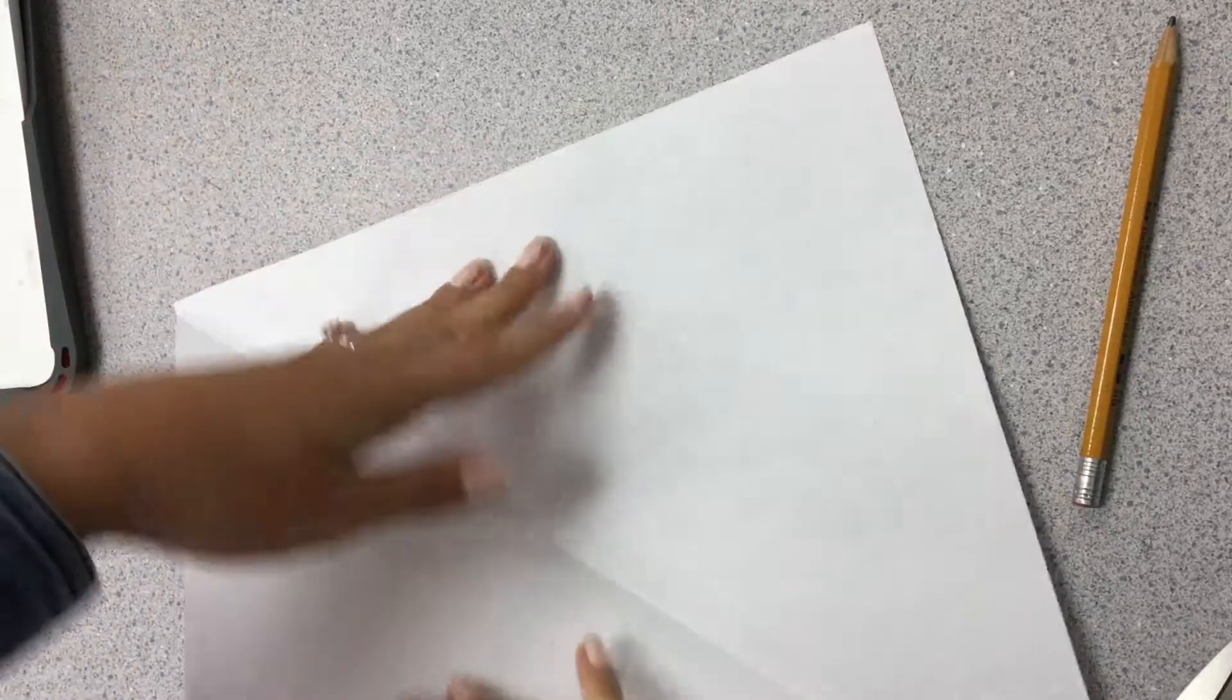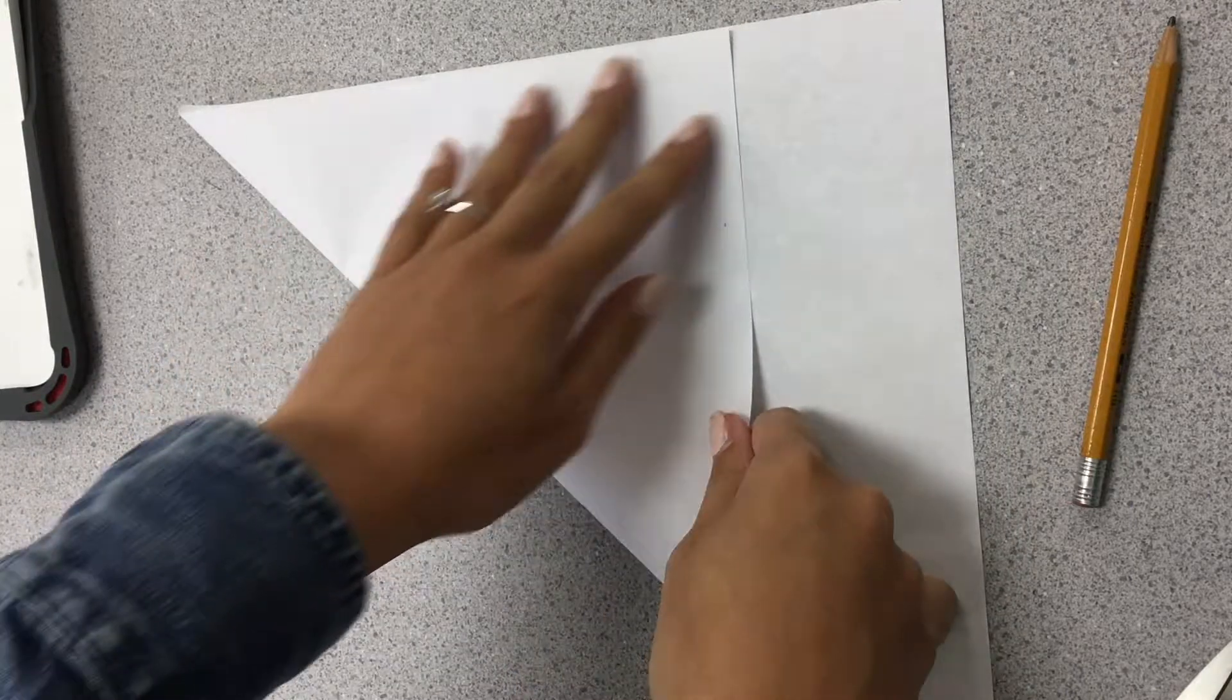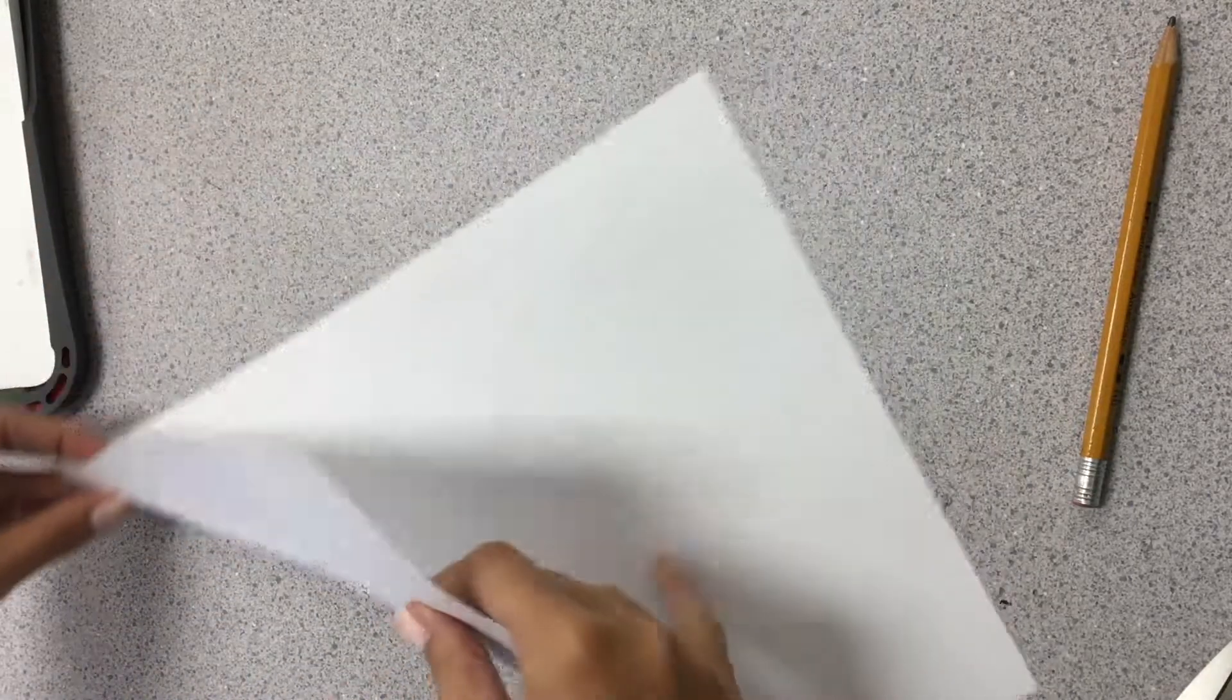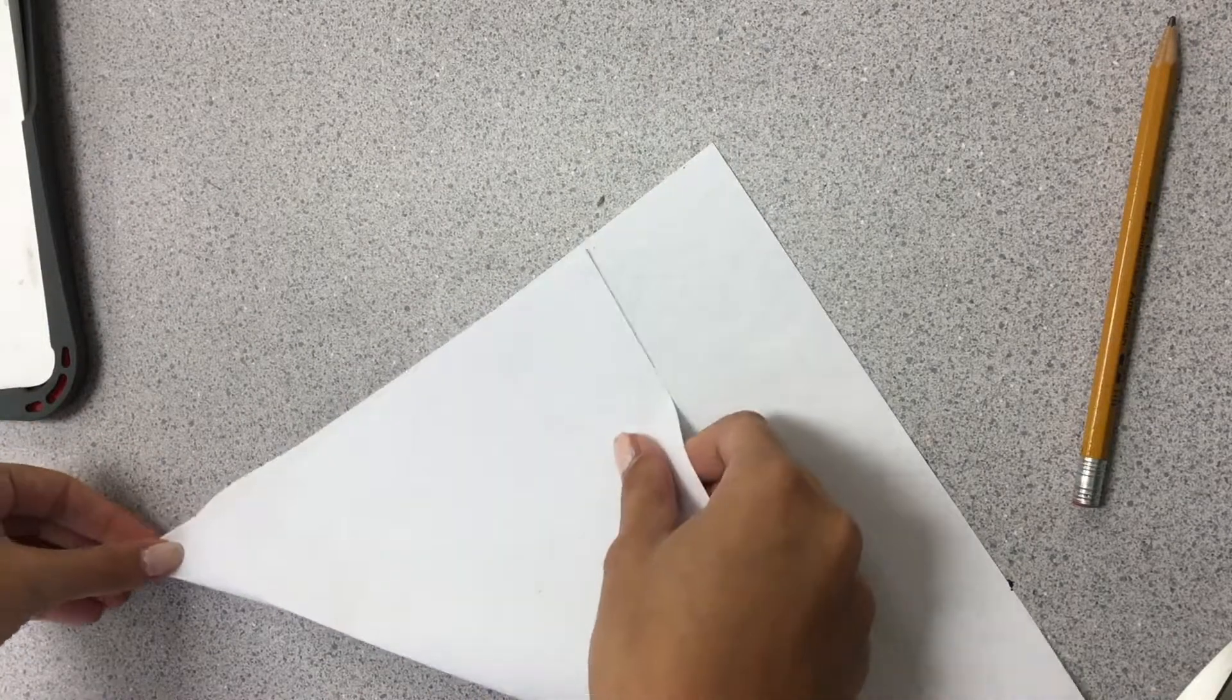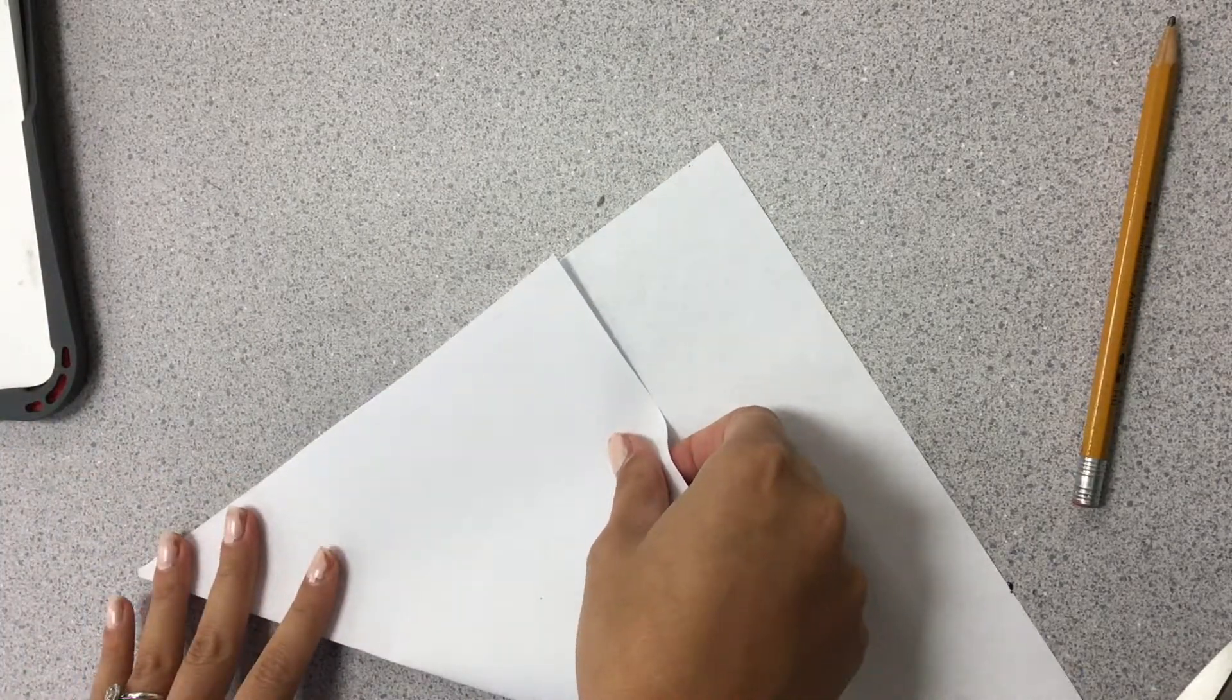So again, your paper looks like this, you're going to take one side, fold it so it lines up. See, mine wasn't even perfect, make sure it lines up even better, and then crease it.